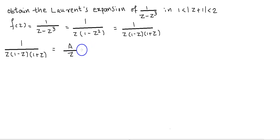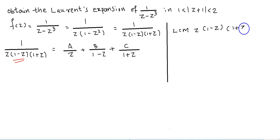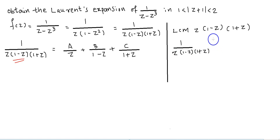Applying partial fractions gives A/z plus B/(1 minus z) plus C/(1 plus z). Upon taking LCM of the denominator, the LCM is z into (1 minus z) into (1 plus z). Each term on both sides is multiplied with this LCM, so the left-hand side becomes 1.